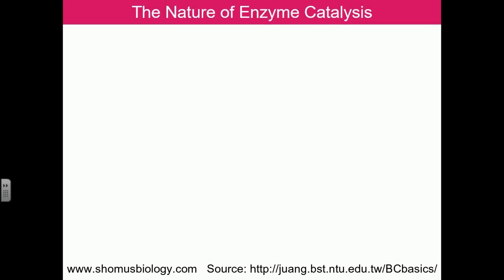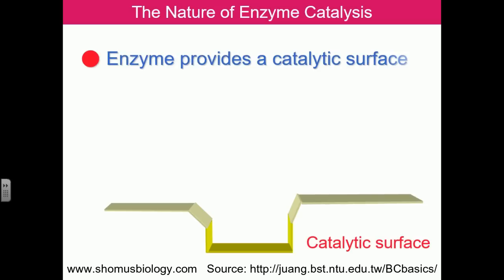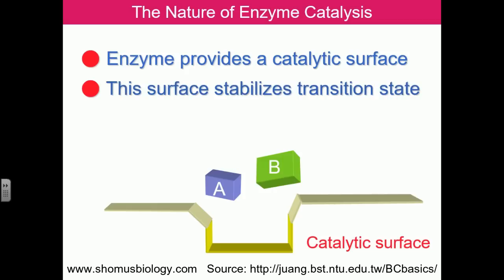Now let's look at the nature of enzyme catalysis. The general catalyst's main function is to provide a surface space — shown here in yellow — which is the enzyme catalytic surface. The reactants are added above this surface, which provides the convenience of space and makes it easier for the reactants to become product. Here we have substrate A and substrate B, and our job is to catalyze A and B into the product. The most difficult part to achieve during the catalysis process is that this surface stabilizes the transition state of both substrates involved in making the product.